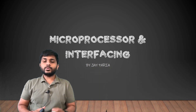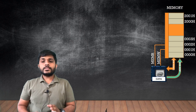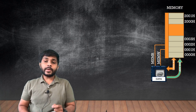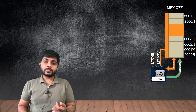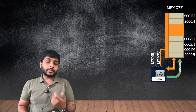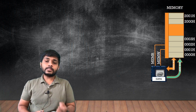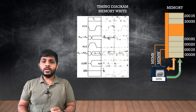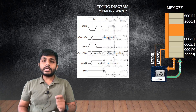Hi everyone, I'm Jay and today we are going to see the timing diagram of the memory write machine cycle. On the screen there is a microprocessor which is connected to the memory. To connect the microprocessor with the memory we need some signals such as control signals — memory read and memory write — and some buses such as the data bus and the address bus. On the screen you can see the timing diagram of the memory write cycle.